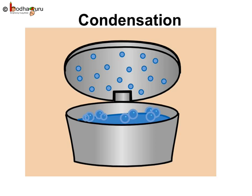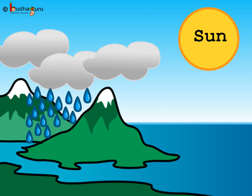Now we will understand the second process. If you cover the boiling water with a lid, you will observe tiny droplets of water on the inner surface of the lid. Why does this happen? The steam or water vapor from the boiling water cools down and changes into tiny droplets of water. This process is called condensation. Condensation is just the opposite of evaporation.